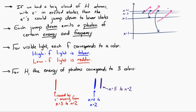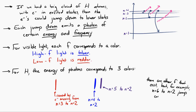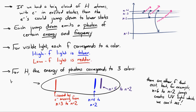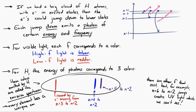There are also frequencies associated with transitions like n equals 6 to n equals 2, but that corresponds to a higher frequency that we can't see — it's ultraviolet light. These colors and frequencies emitted by hydrogen are called its emission spectrum. Every element has unique energy levels, and therefore a unique emission spectrum — it's kind of like the element's fingerprint. You can identify what element you're looking at by the frequencies it emits, which tells you what energy levels are present.